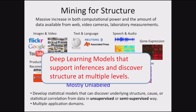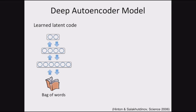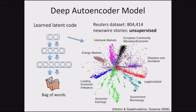One particular framework for doing that is deep learning, where you're trying to learn hierarchical representations of data. Here's one example: you can take a simple bag-of-words representation of an article or a newspaper, use something called an autoencoder with multiple levels, extract some latent code, and get a representation out of it. This is done completely in an unsupervised way — you don't provide any labels. The kind of structure the model discovers could be useful for visualization or to see what structure exists in your data.